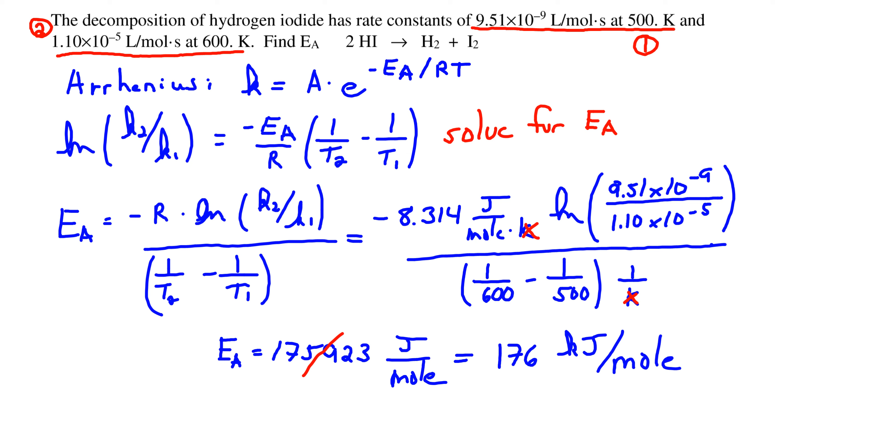The units of one over temperature are one over k. So once we crunch this out, we know we have units of joules per mole. Three sig figs are justified in our answer. So we can write this with three sig figs, divide by 1,000 to get from joules to kilojoules, and we have our final answer.